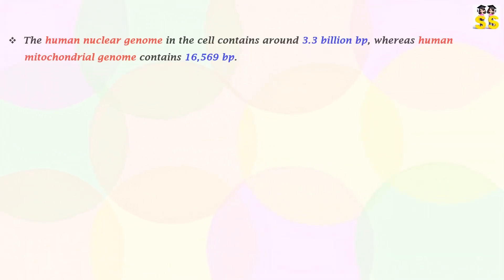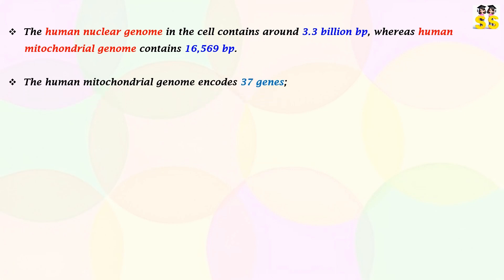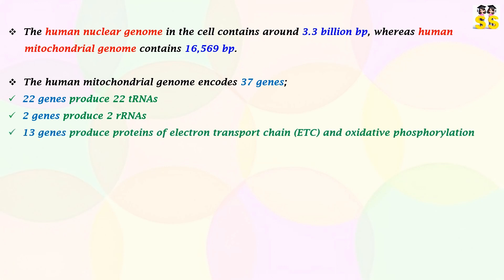The nuclear genome in the human cell contains around 3.3 billion base pairs. The human mitochondrial genome contains 16,569 base pairs, which encodes 37 genes, out of which 22 genes produce 22 tRNAs, 2 genes produce 2 rRNAs, and 13 genes produce proteins of the electron transport chain and oxidative phosphorylation.